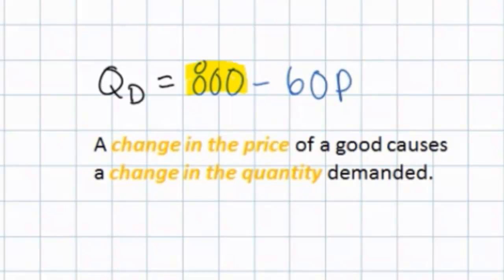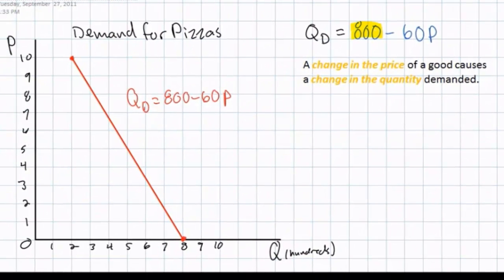As we saw in our last lesson, a change in the price of a good causes a movement along the demand curve and a change in the quantity demanded. This is the P variable in our demand equation. As we see here in the market for pizzas, an increase in the price of pizzas from $2 will cause a movement along the demand curve, changing quantity demanded from 680 pizzas to 560 pizzas at a price of $4. This is simply a movement along the demand curve caused by a change in the P variable.